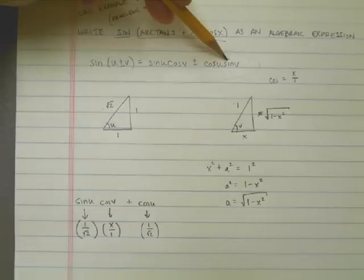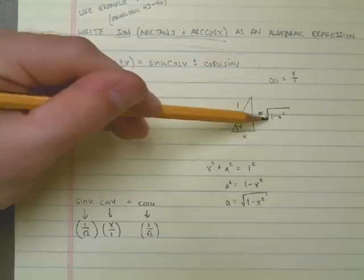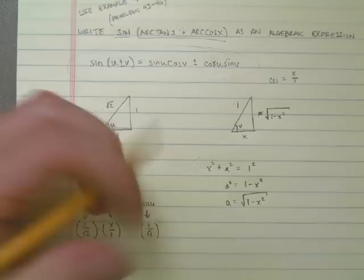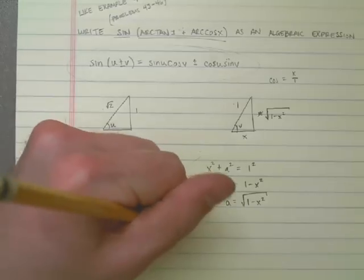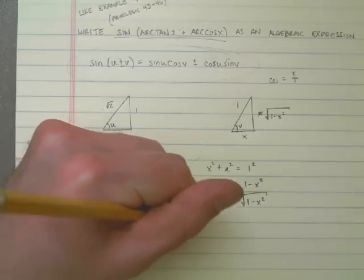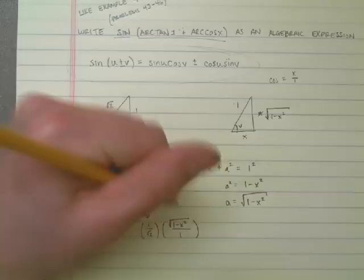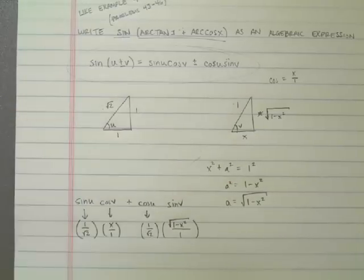Times the sine of v. And the sine of v happens to be the square root of 1 minus x squared, all over 1.